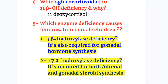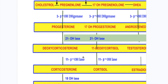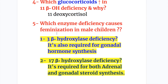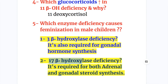Q4: In 11 beta hydroxylase deficiency, cortisol is deficient and 11-deoxycortisol is increased because the pathway is blocked, so the substrate accumulates. Q5: Enzyme deficiencies causing feminization in male children are: 3 beta hydroxylase deficiency, because it is required for gonadal hormone synthesis, and 17 alpha hydroxylase deficiency, which is also required for both adrenal and gonadal steroid synthesis.